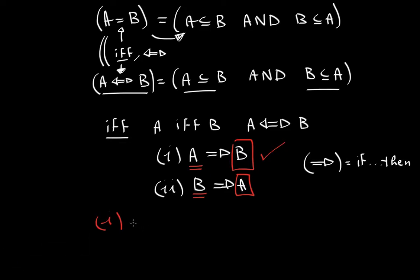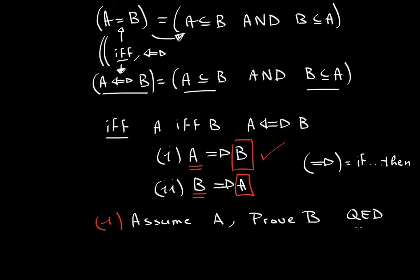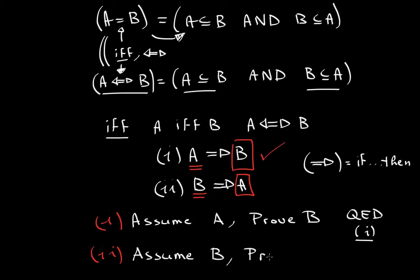In your first step, assume A and prove B. Once you finish, write a little QED and in brackets note it as the first portion. Then your second step is to assume B and prove A.